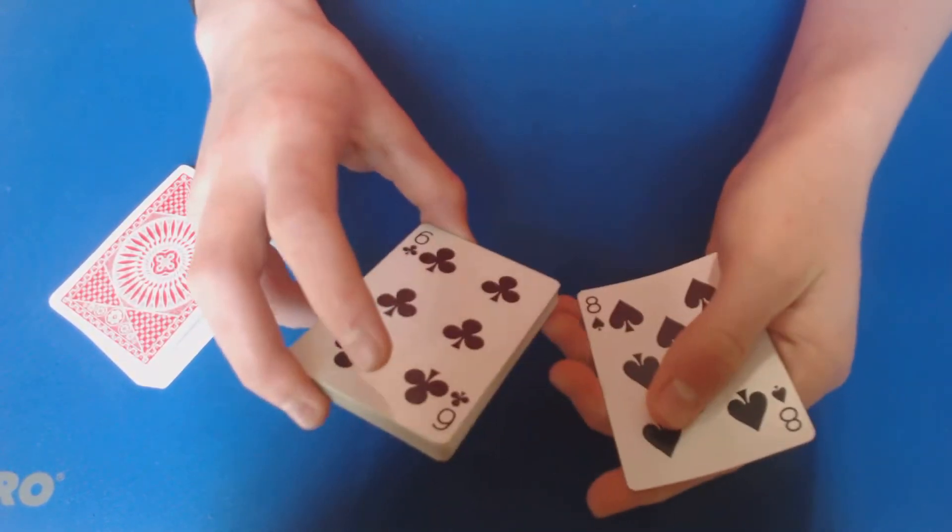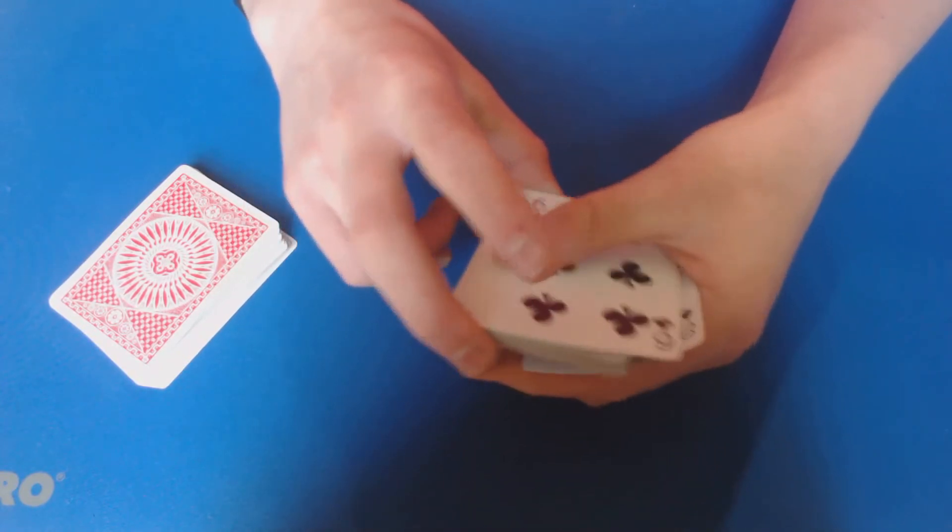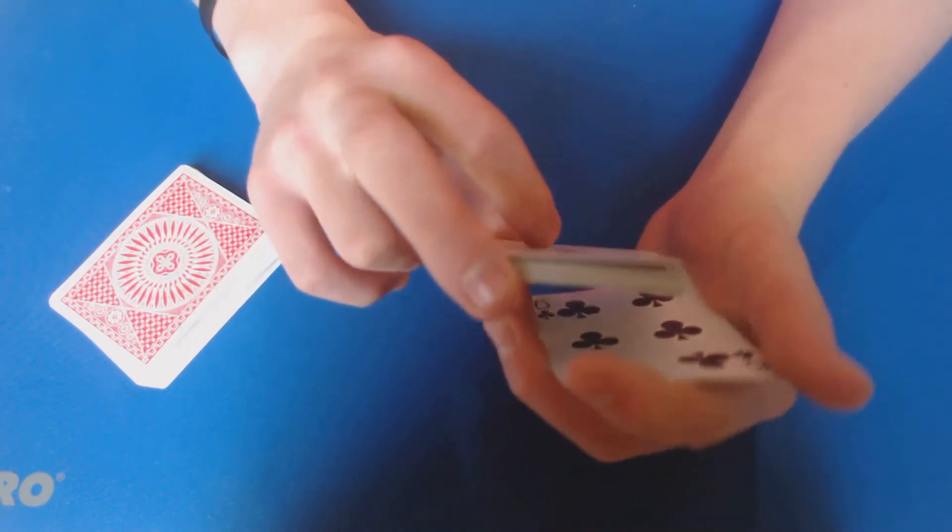You're going to be like, okay, I hope your card's in here. So go ahead, pull off the eight of spades, get a pinky break above it, pull out the six, and now you have a pinky break in between those two.